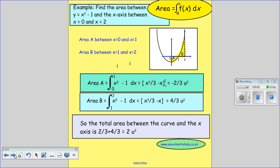So here's an example of that. Find the area between y equals x squared minus one and the x-axis between x equals zero and x equals two.